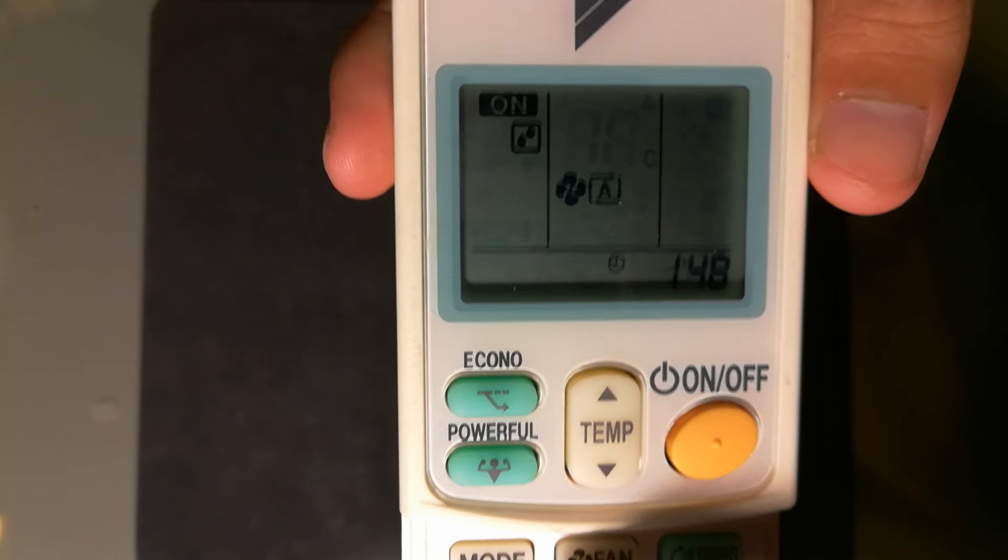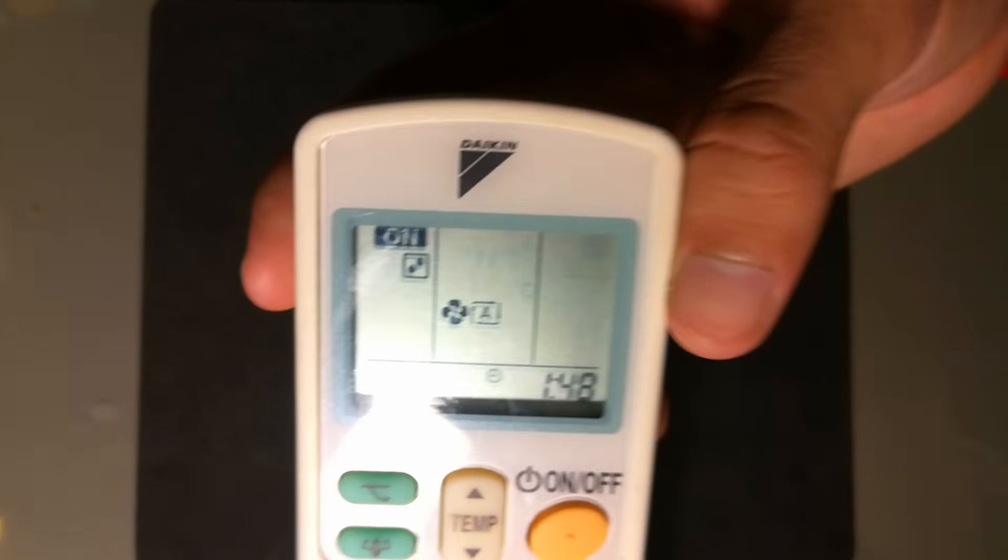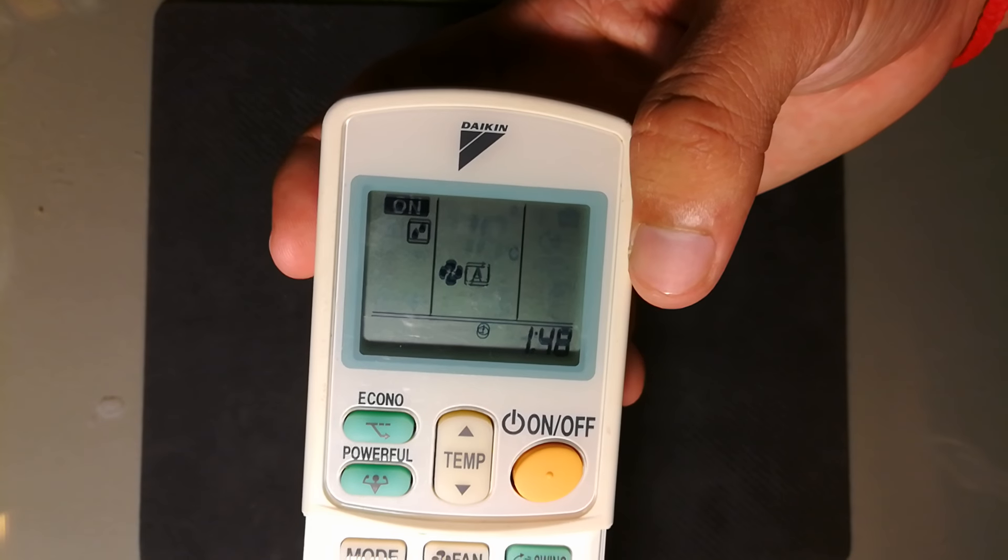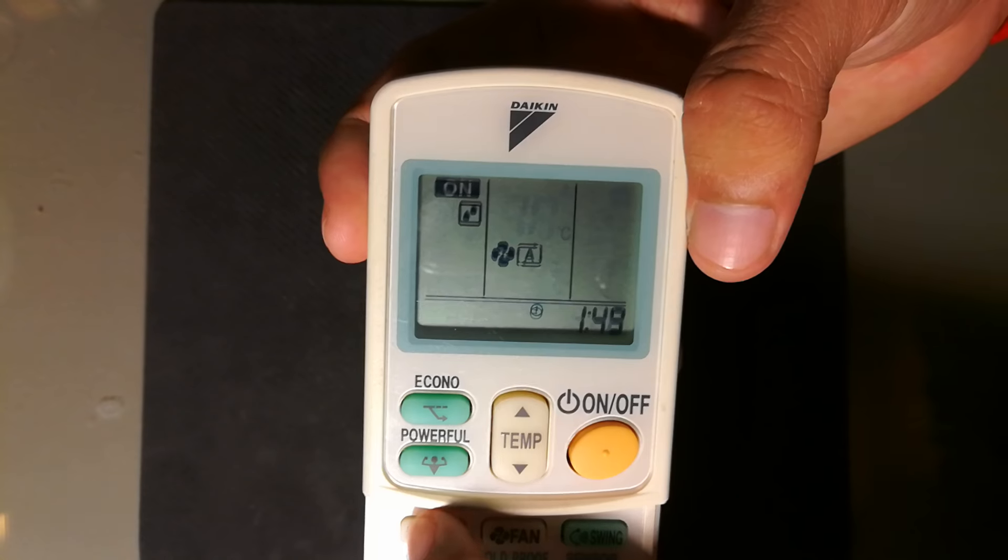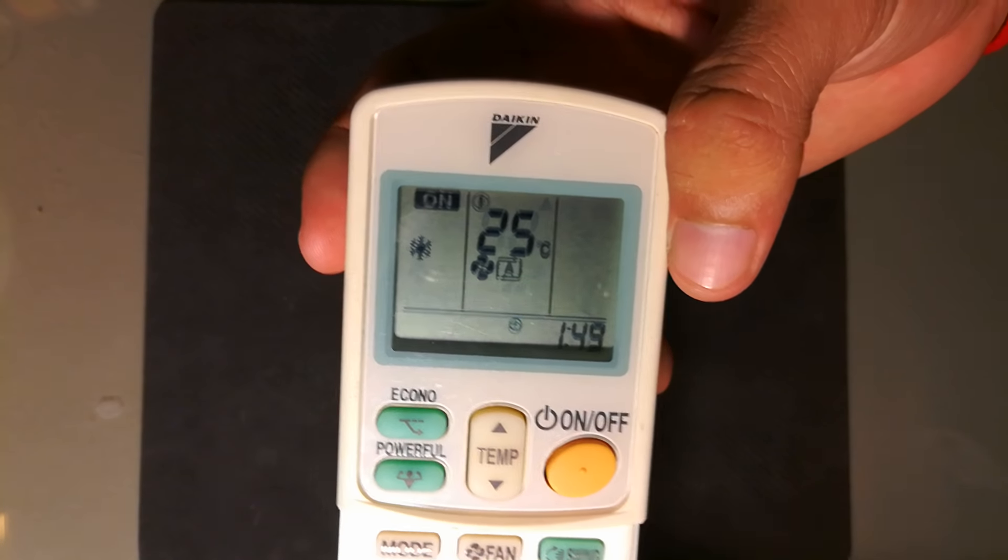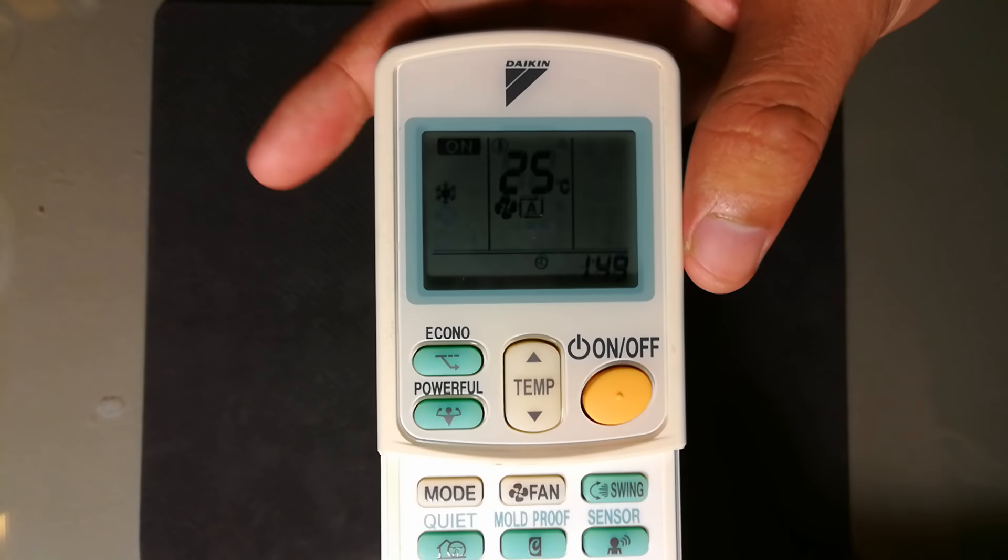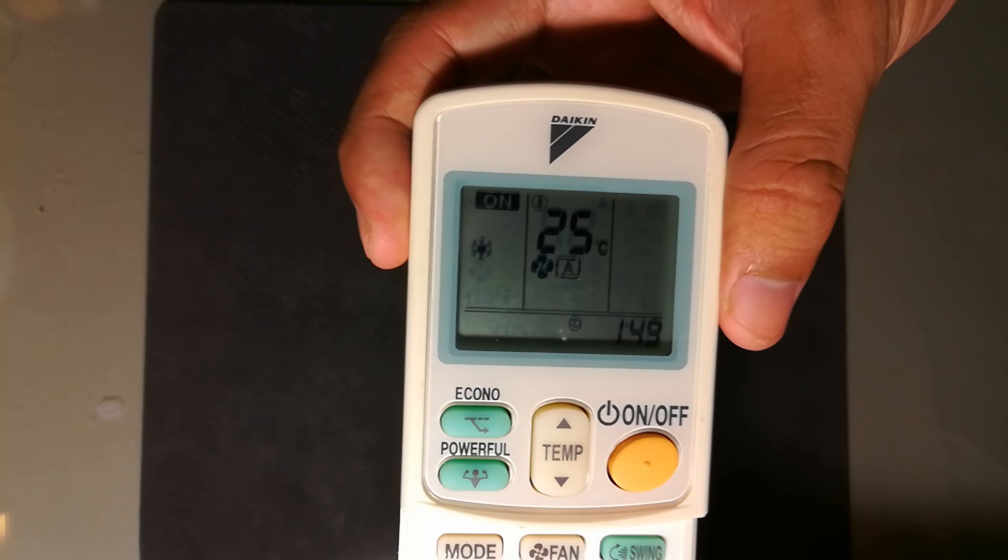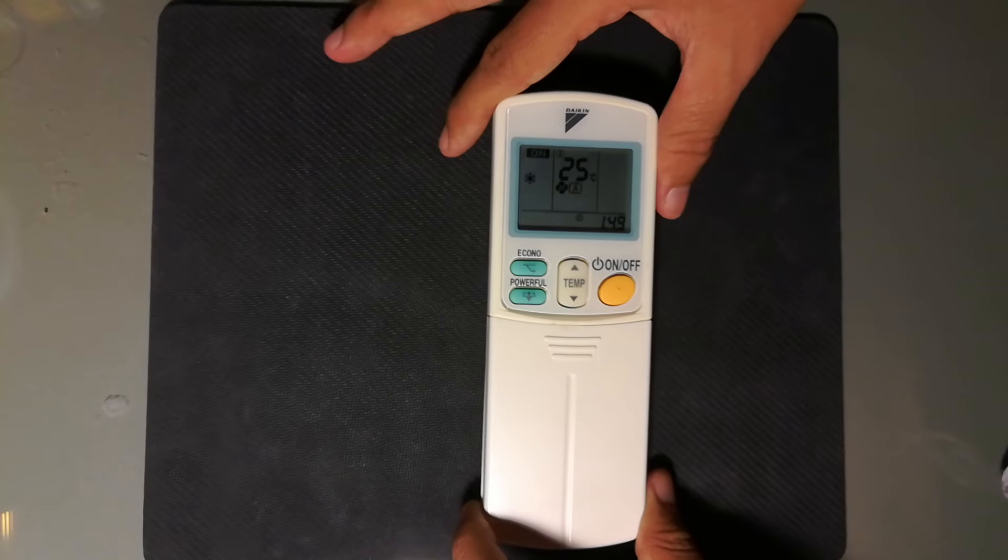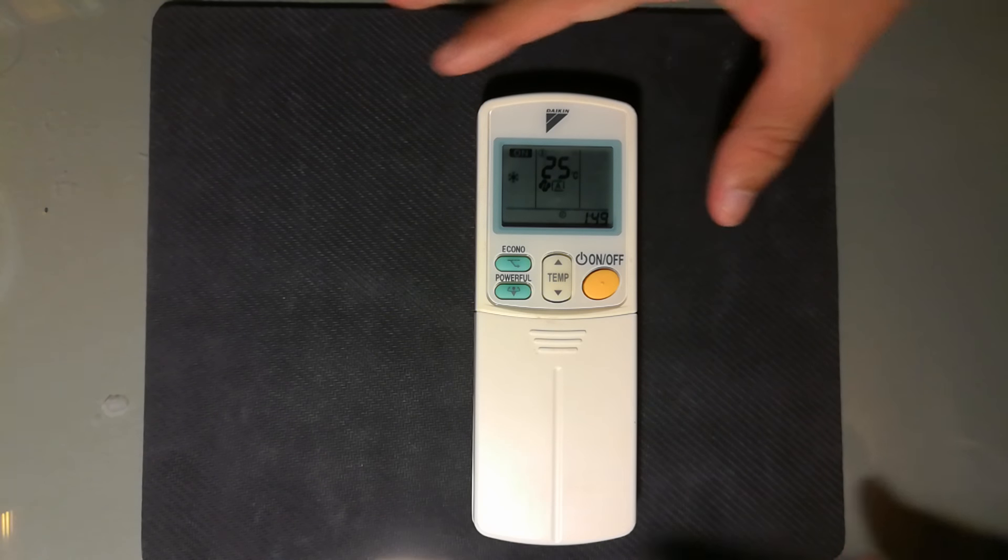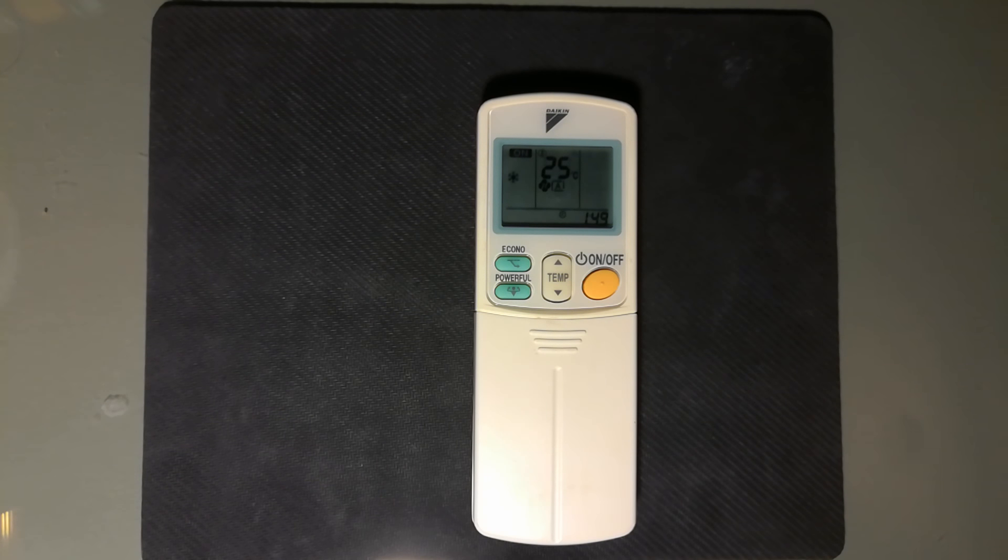Then we go back to the cool mode. And that's all for the mode button on this Daikin air conditioner remote control. Okay everyone, thanks for your time watching my video and I hope to see you again in the next video.